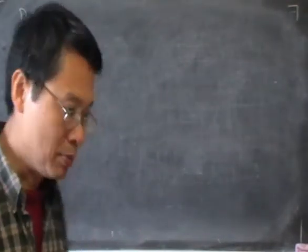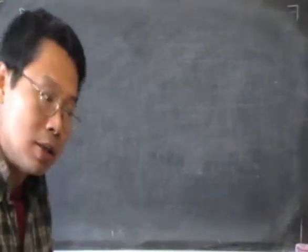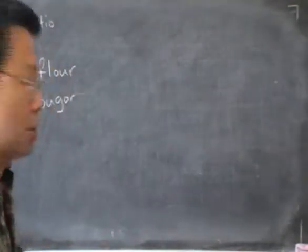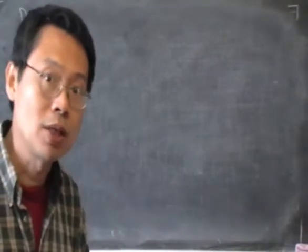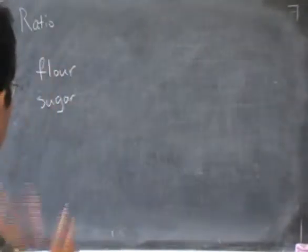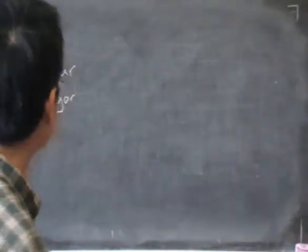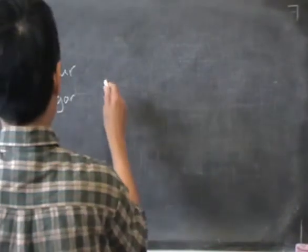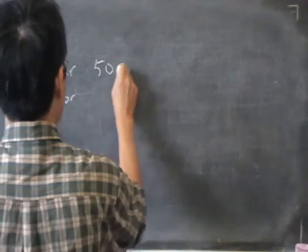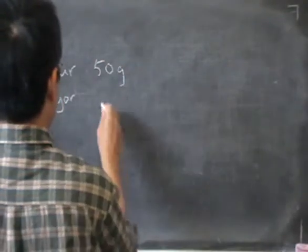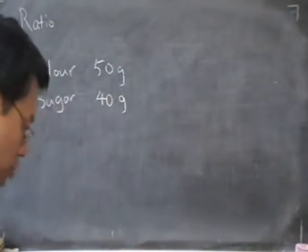I need them to be in a certain amount, so I can't use too much flour and I can't use too much sugar, otherwise the cake will not taste good. So just to make up some numbers, suppose that I need 50 grams of flour and 40 grams of sugar.